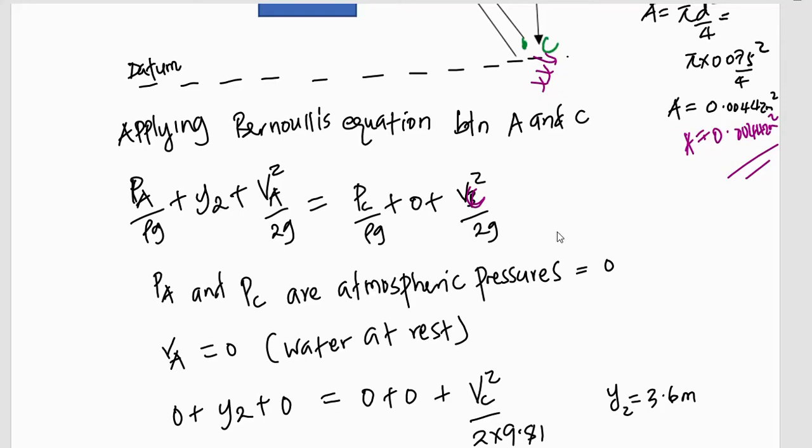P_A and P_C are the atmospheric pressures, because since A is exposed to the atmosphere and C is exposed to the atmosphere, then the pressures will be atmospheric. And since we are dealing with gauge pressures, this will reduce the pressures to 0. So, if we can take them to be 0, then they will cancel each other. We will have 0, 0 this side.